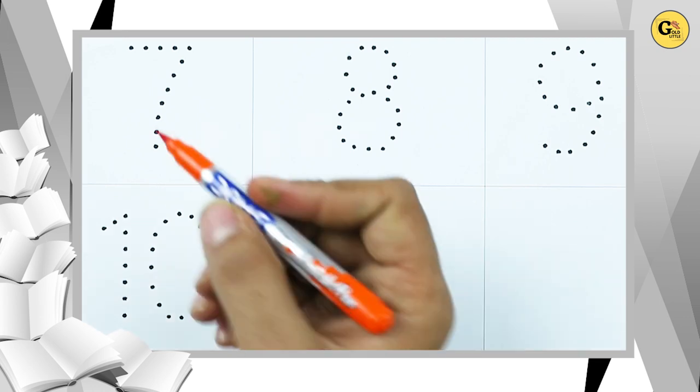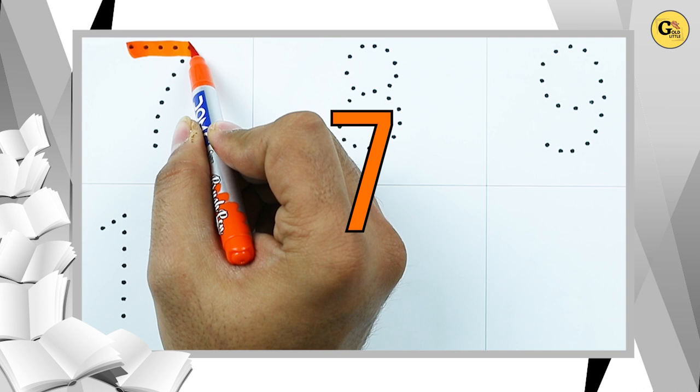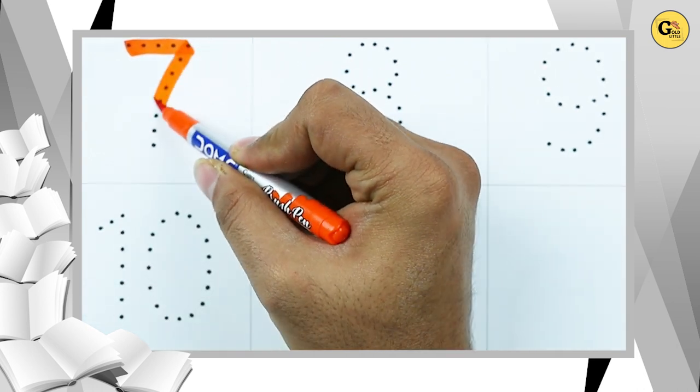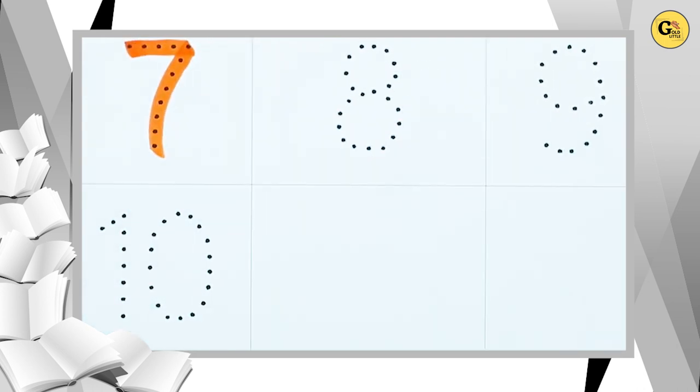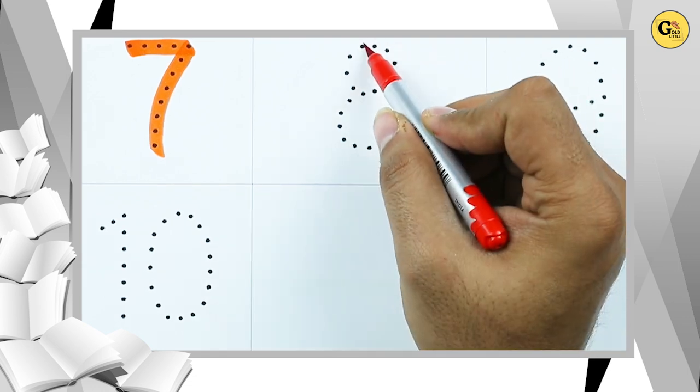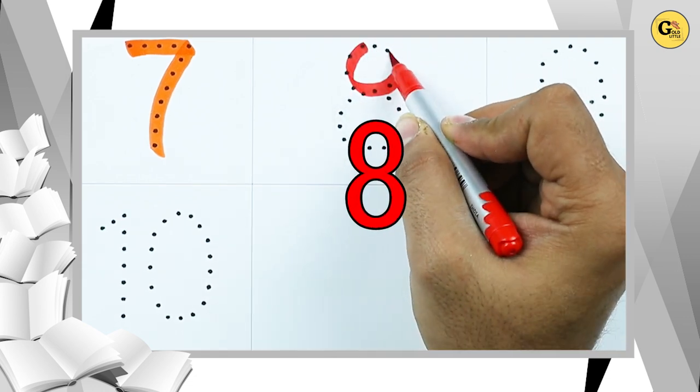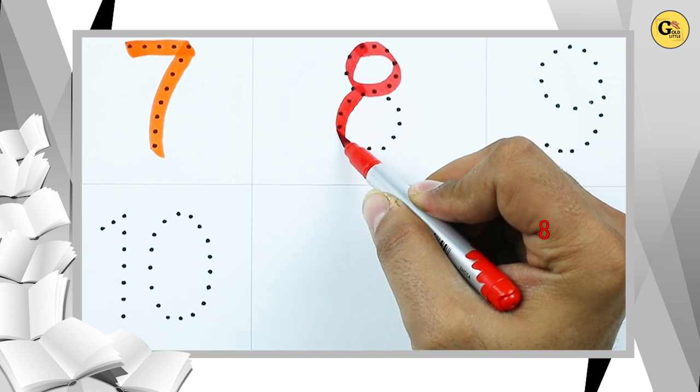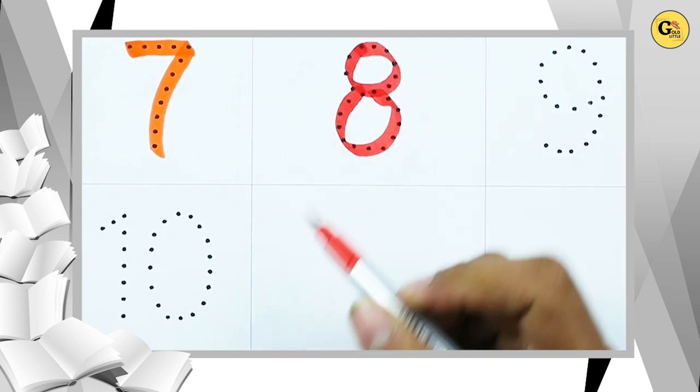Number 7 with orange color. It's number 7. Number 8 with red color. It's number 8.